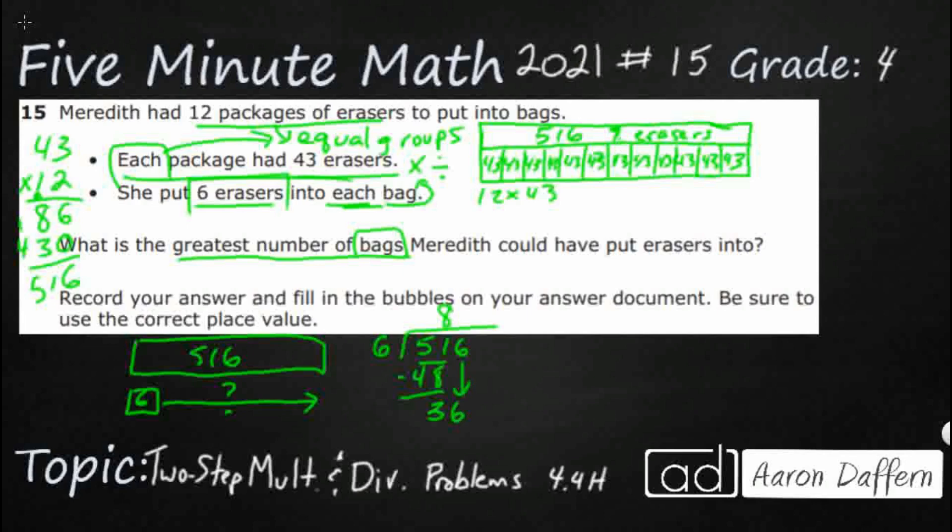Start all over. Six goes into 36. Oh good. It's going to be even six times because six times six is 36. And there we go. That's how many bags I can use is that 86.